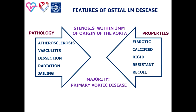Ostial left main coronary artery lesion comprises a subset of localized vessel involvement arising within 3 mm of the origin. Usually, ostial left main stenosis is part of aortic disease. These lesions are as a rule calcified and fibrotic, have resistance to dilatation, and a prevalence of recoil. PCI in this location is technically challenging due to difficulties in seating the guiding catheter, obtaining adequate images for stent placement, ensuring proper stent position, and preventing stent migration.